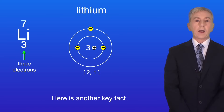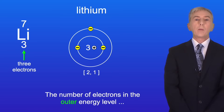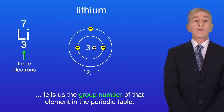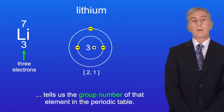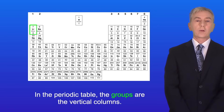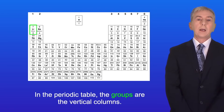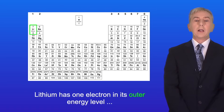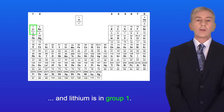Here's a key fact: the number of electrons in the outer energy level tells us the group number of that element in the periodic table. The groups are the vertical columns. Lithium has one electron in its outer energy level, and lithium is in group one.